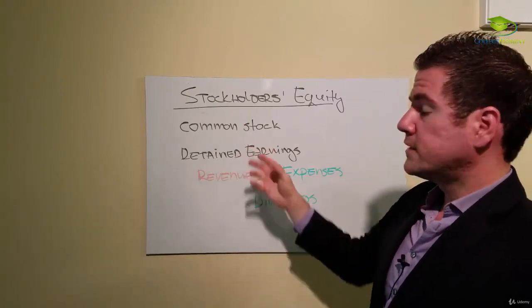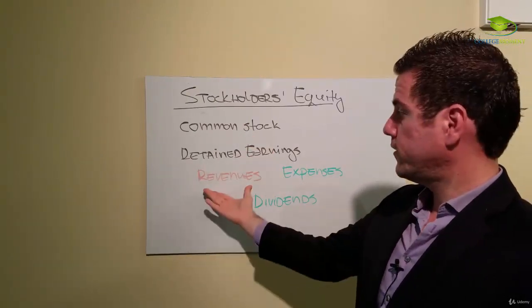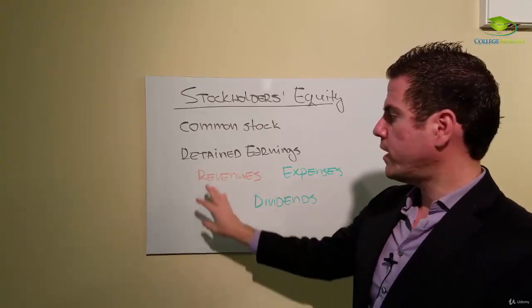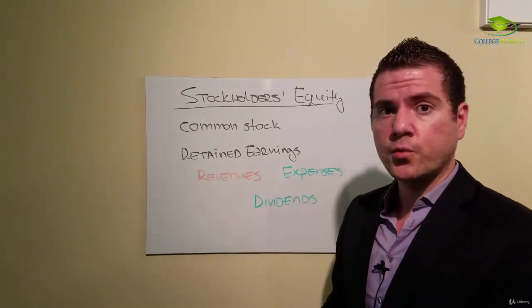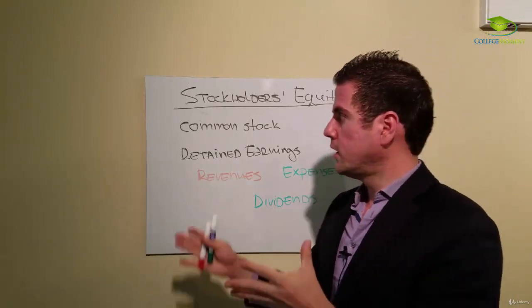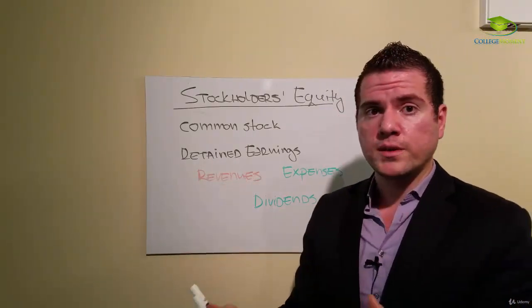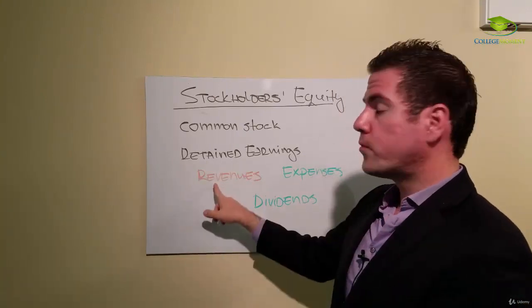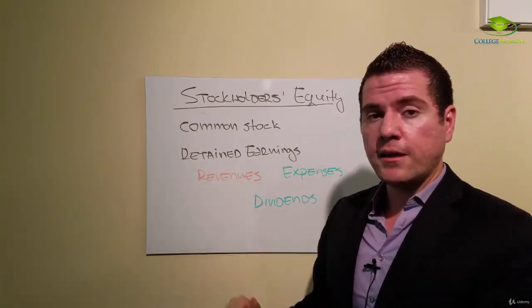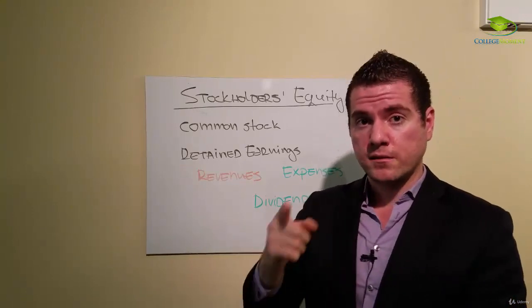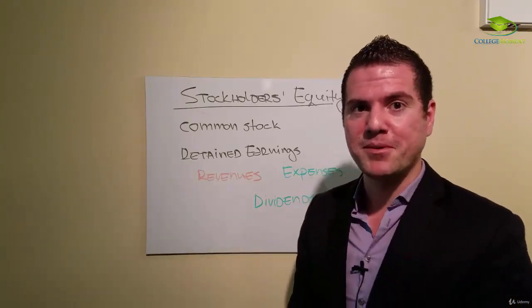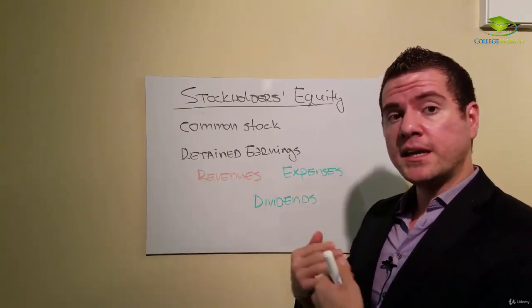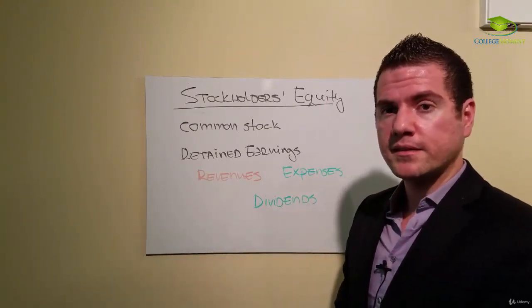Retained earnings is really revenues minus expenses minus dividends. Revenues are items for which we provide service. So for example, if I own a tutoring business and I provide tutoring services, I earn revenue. If I pay rent for the camera that I'm using and I'm taping right now, I'm paying an expense. I'm incurring an expense.